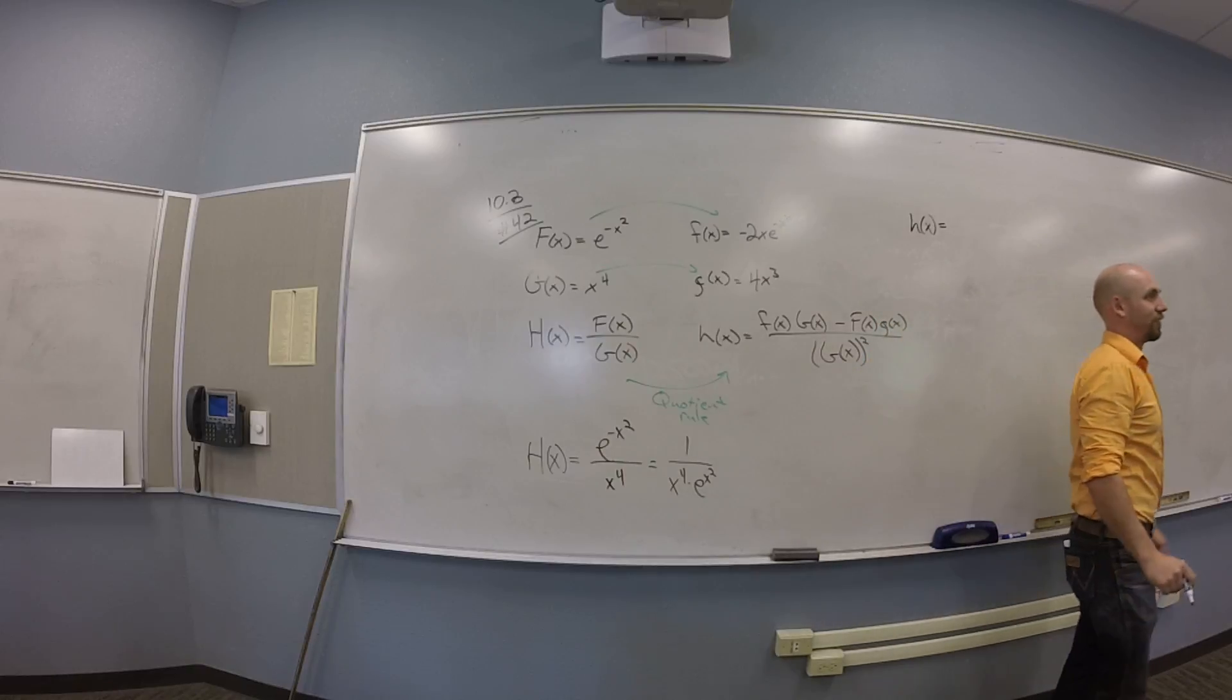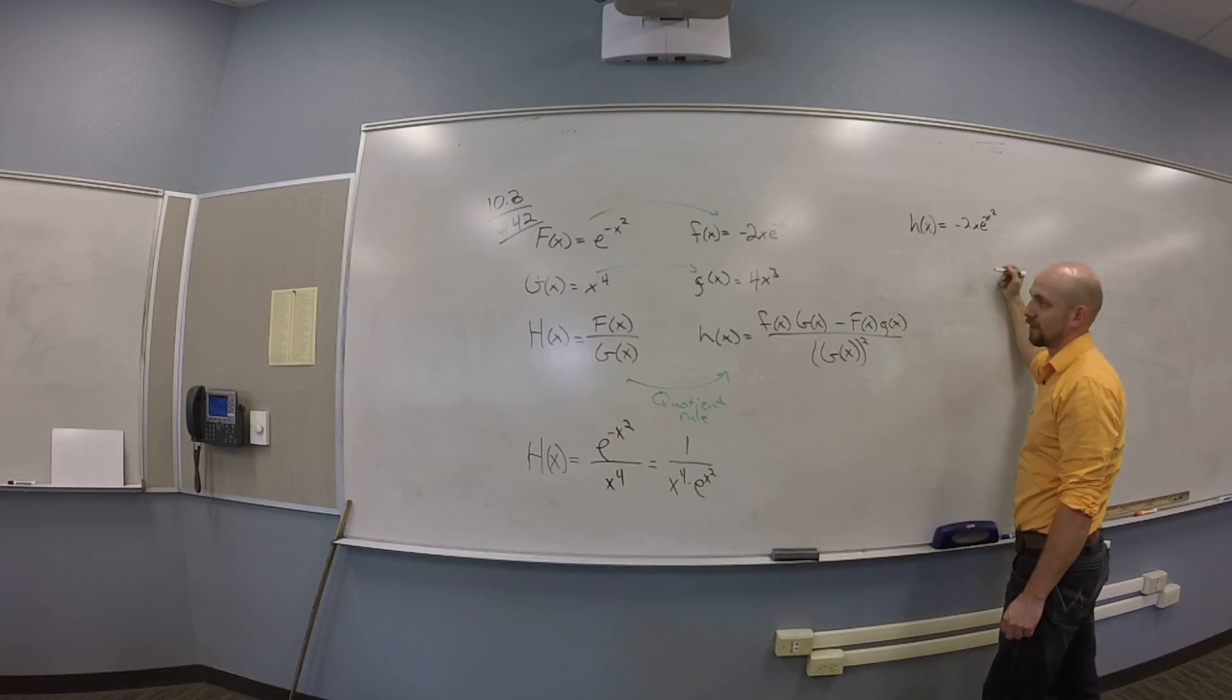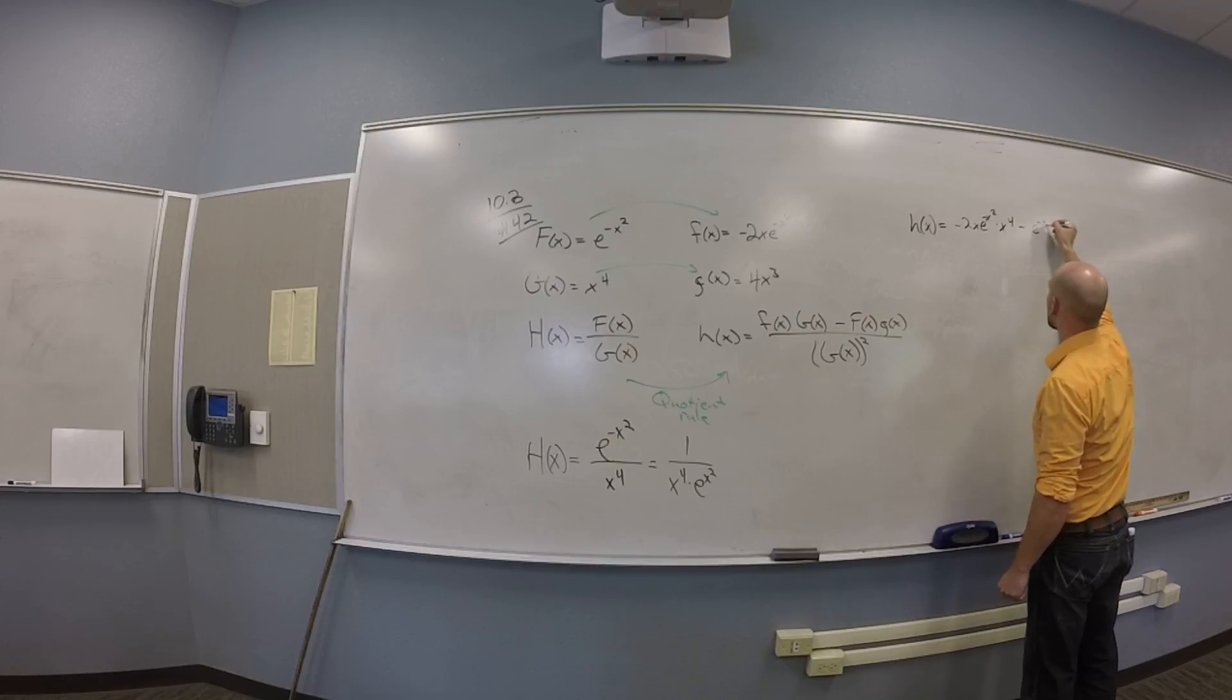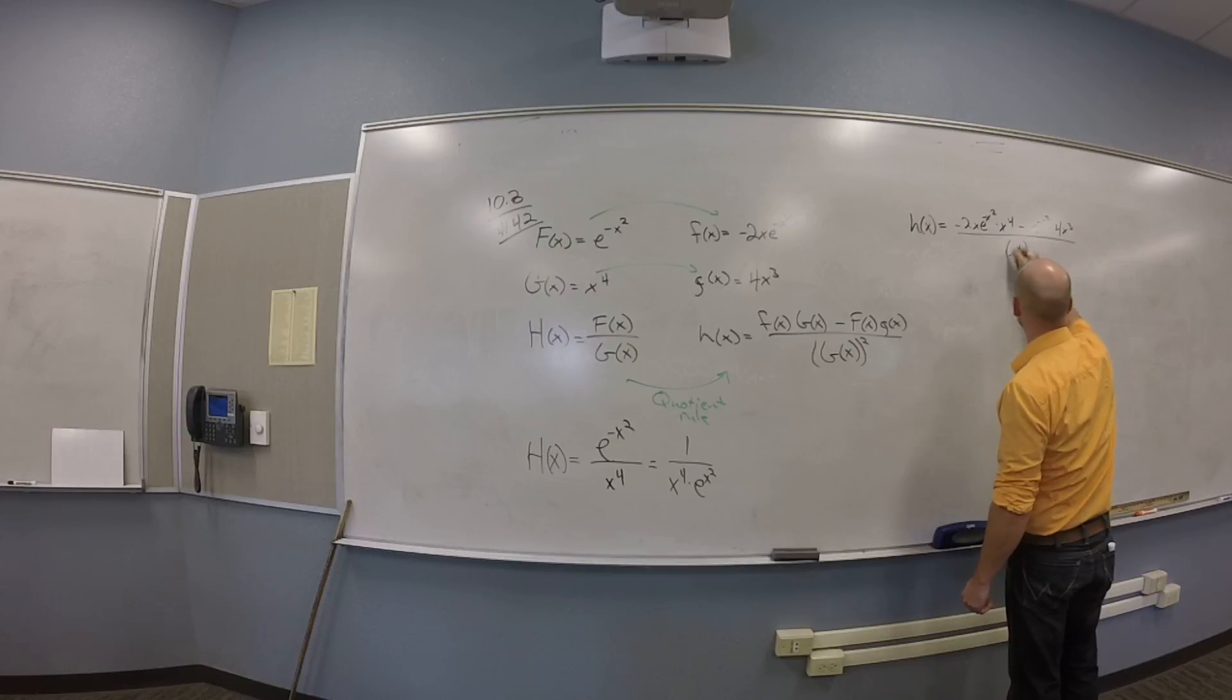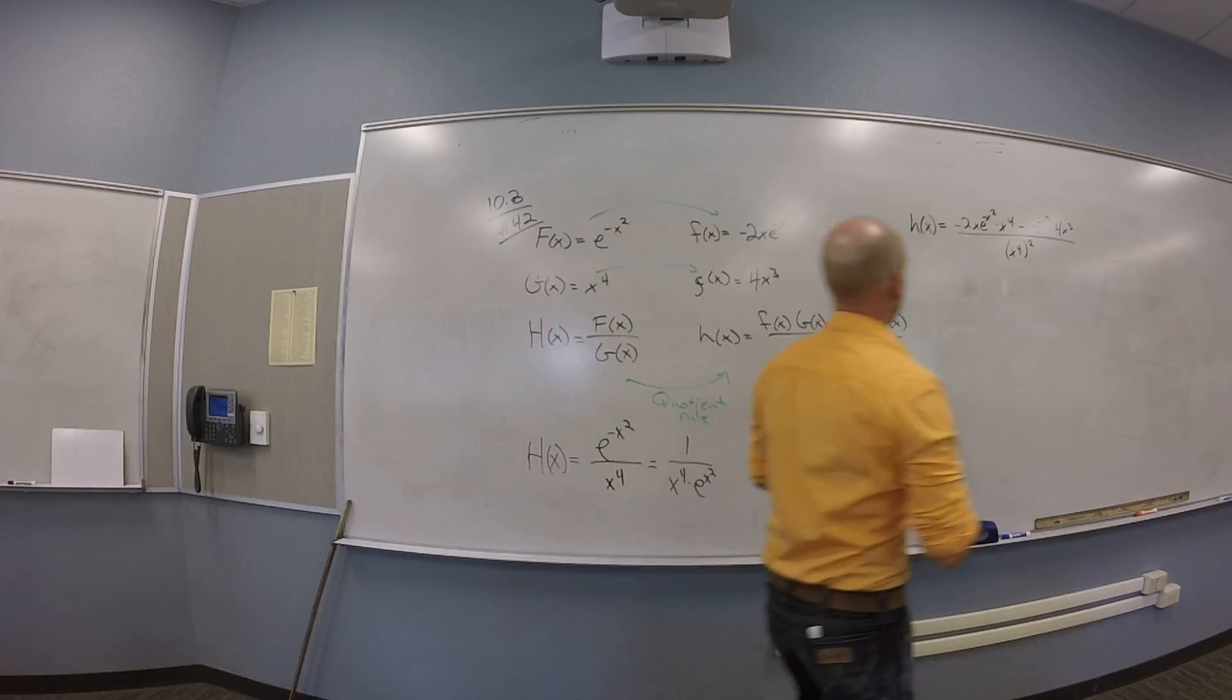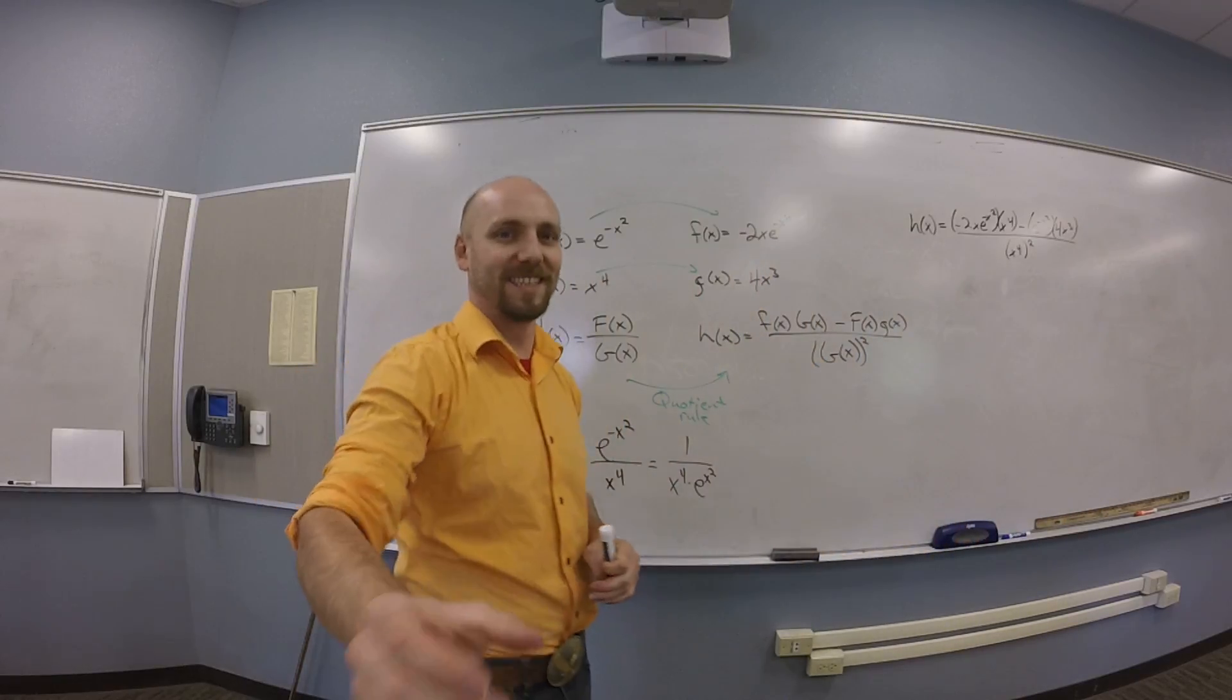Okay, how about little h of X? So take little f and shove it in for little f. So you got negative 2X, e to the minus X squared. And then multiply by big G, which is X to the 4th. Minus. And then subtract e to the negative X squared times 4X cubed. And all over X to the 8th. Do we have parentheses in there? Sure. Lots of parentheses. When in doubt, put in shitloads of parentheses. Good idea.